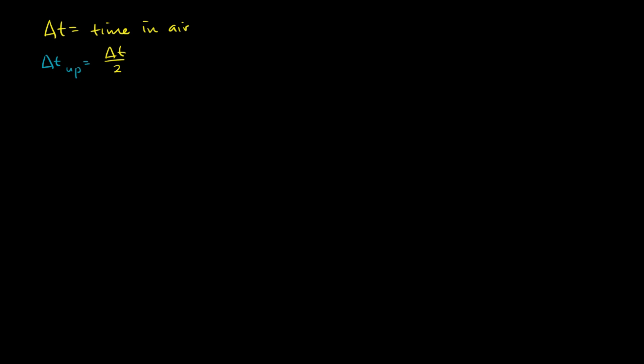So what was our initial velocity? Well, all we have to do is remind ourselves that the change in velocity, which is the same thing as the final velocity minus the initial velocity. So the final velocity, remember, we're just talking about half of the path of this ball.